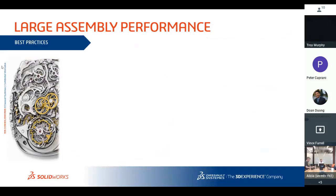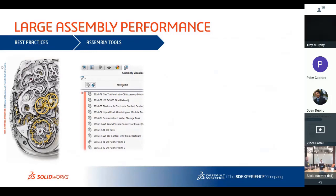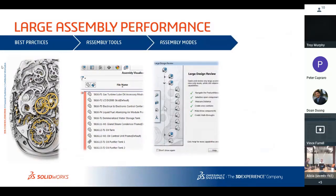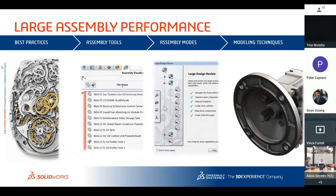I'm going to address this in four different sections: first, best practices; then assembly tools — things you can use to investigate your assembly, see what's going wrong and what you can do about it; then different assembly modes and how to use them to your advantage; and finally general modeling techniques along with system options and document properties that could potentially help speed up performance.